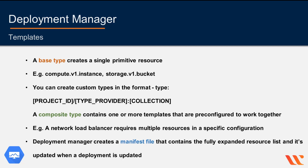You can also create custom types, which is an advanced topic. A composite type contains one or more templates that are pre-configured to work together. These templates expand to a set of base types when deployed. For example, you can create a composite type that deploys a network load-balanced managed instance group. A network load balancer requires multiple Google Cloud Platform resources, and some of the configuration between these resources can be set up in the configuration file. Then this file can be registered with the deployment manager and reused with different parameters.